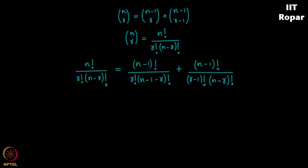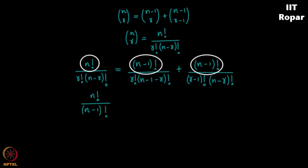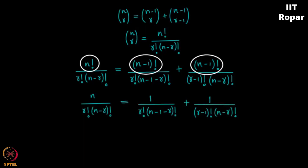As you can see, there is n factorial in the numerator on the left hand side and n minus 1 factorial on the right hand side. So I will take n minus 1 factorial common on the right hand side and then bring that down to the left hand side, which makes it n factorial divided by n minus 1 factorial — just like 10 factorial by 9 factorial is simply 10. So n factorial divided by n minus 1 factorial is n, and the numerators become 1 and 1 on the right hand side.